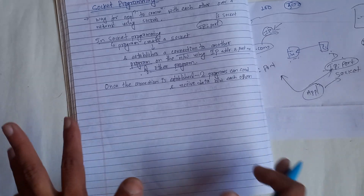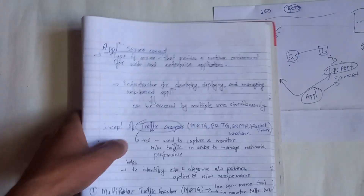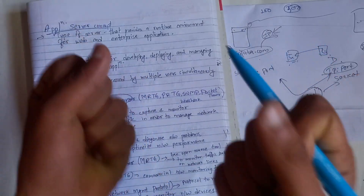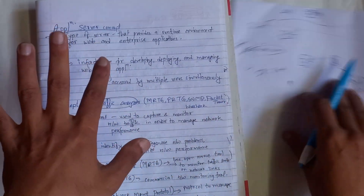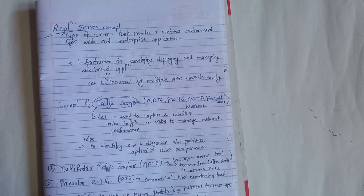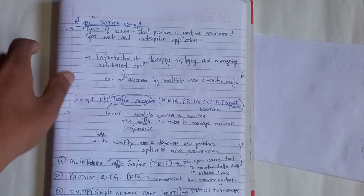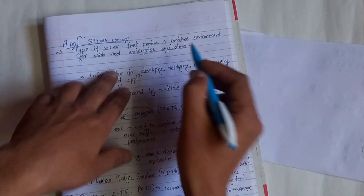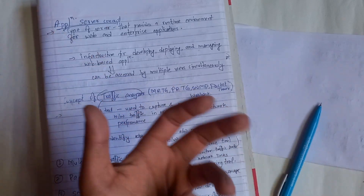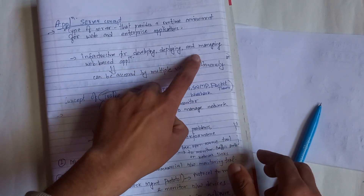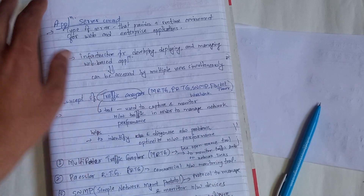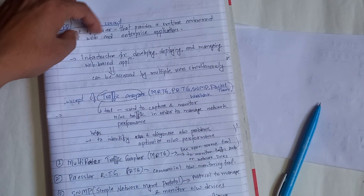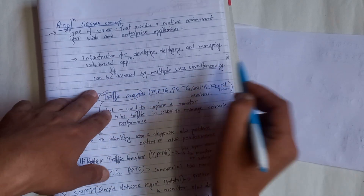I want to make a Linux series and DevOps series. This is socket programming — it's a socket for application. Application Server Concept: it is a type of server that provides a runtime environment for web and enterprise applications. It provides the infrastructure for developing, deploying, and managing web-based applications — for example, e-commerce. It can be accessed by multiple users simultaneously.